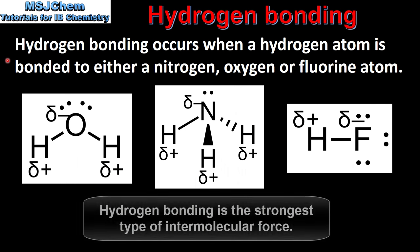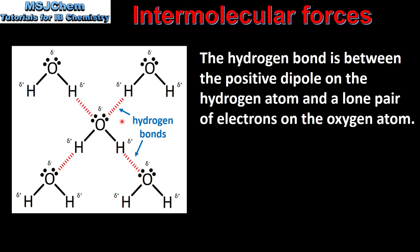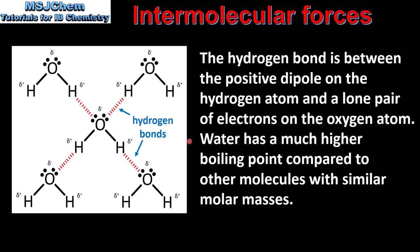And finally we look at hydrogen bonding. Hydrogen bonding occurs when a hydrogen atom is bonded to either a nitrogen, oxygen, or fluorine atom. Here we have three examples of molecules that can form hydrogen bonds, each with a hydrogen atom bonded to an oxygen, nitrogen, or fluorine atom. Here we can see hydrogen bonds between water molecules. The hydrogen bond is between the positive dipole on the hydrogen atom and the lone pair of electrons on the oxygen atom. Because of hydrogen bonding, water has a much higher boiling point compared to other molecules with similar molar masses.